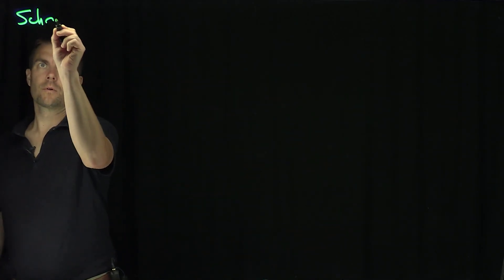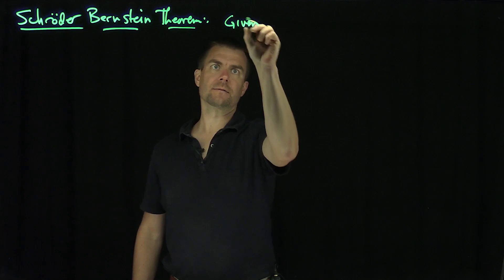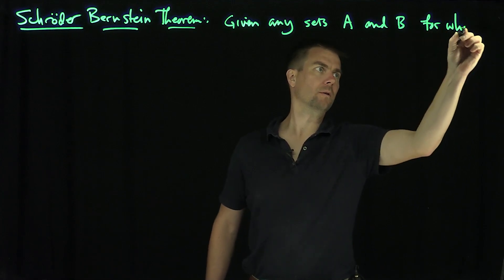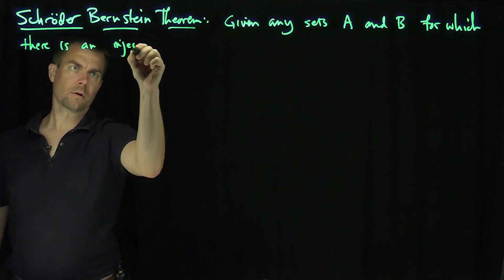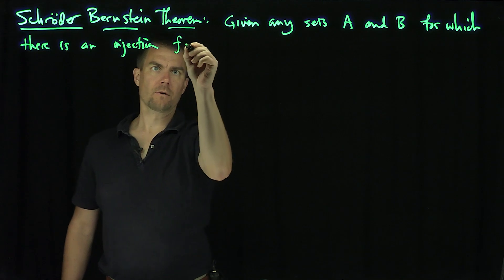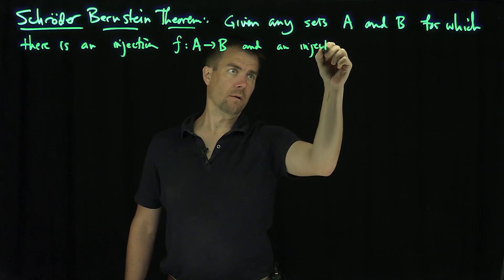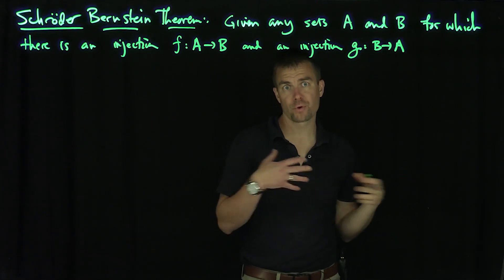Hello students. This video will prove the Schroeder-Bernstein Theorem. The Schroeder-Bernstein Theorem is a theorem about cardinalities, and it states the following: given any sets A and B for which there is an injection F from A into B and an injection G from B into A, then there is a bijection between A and B.